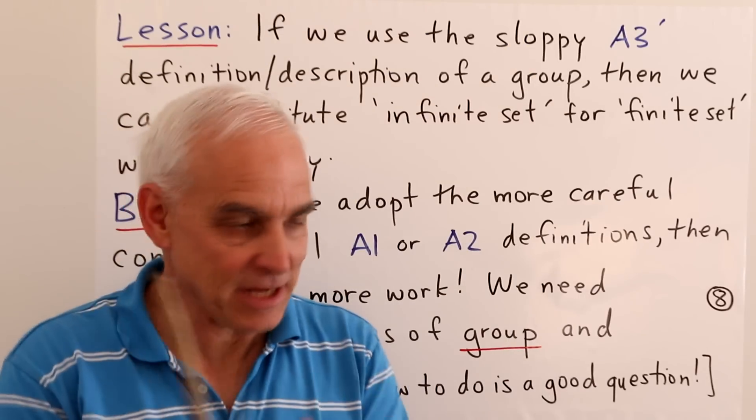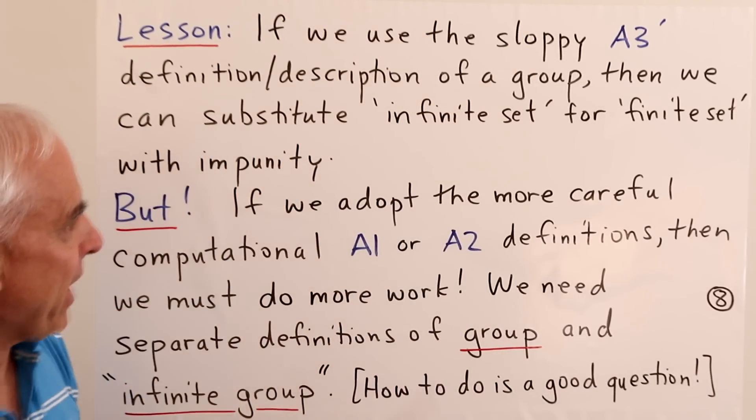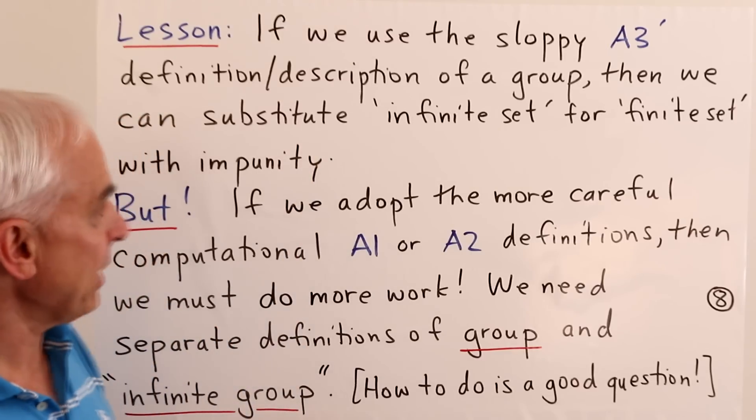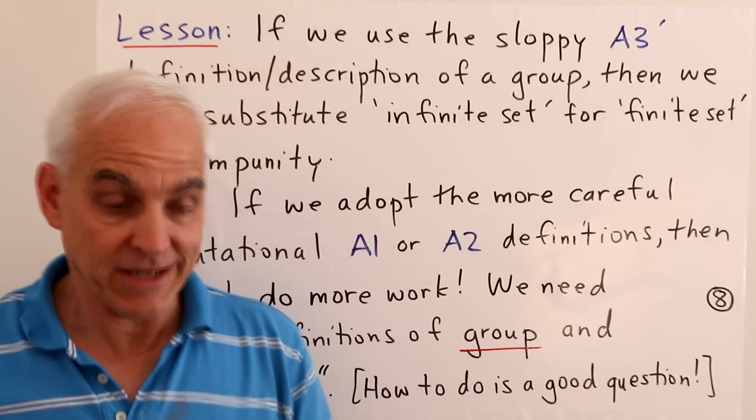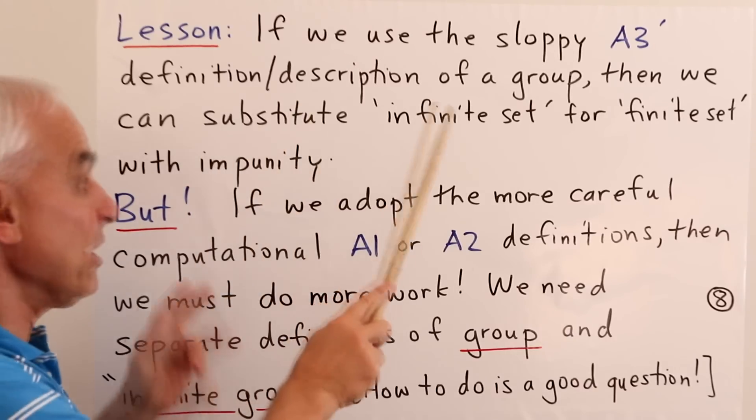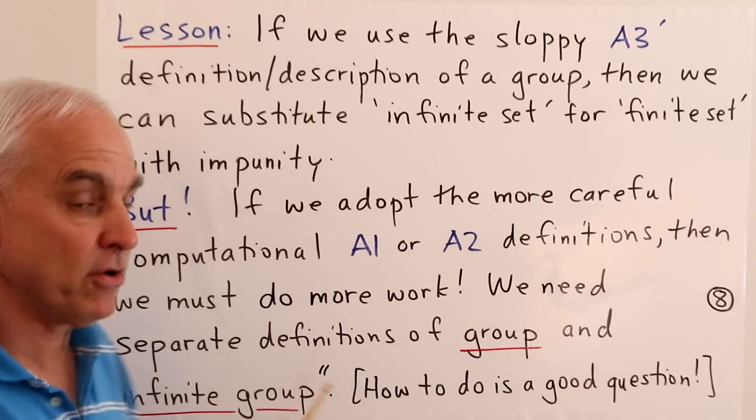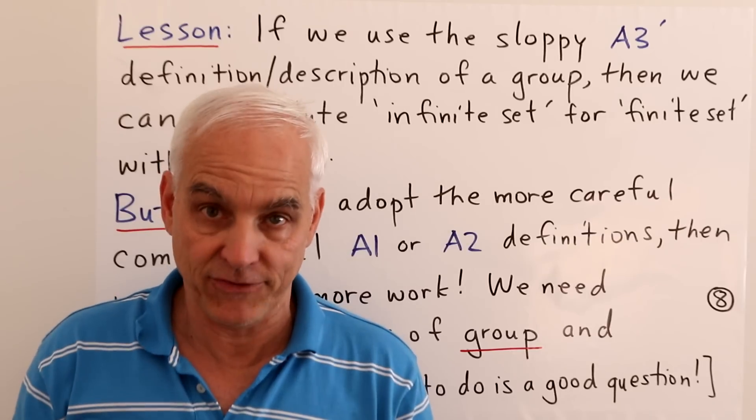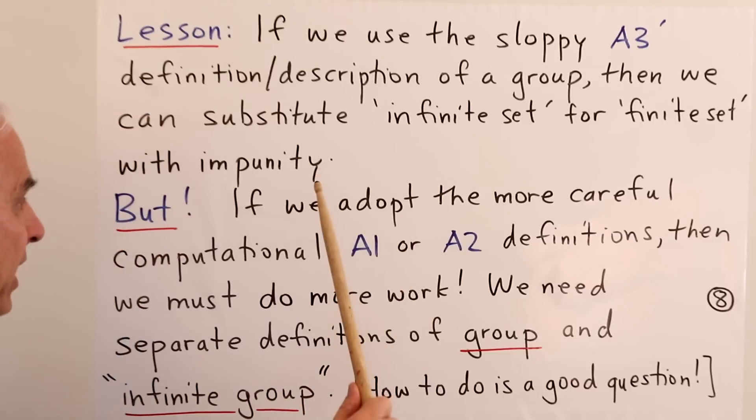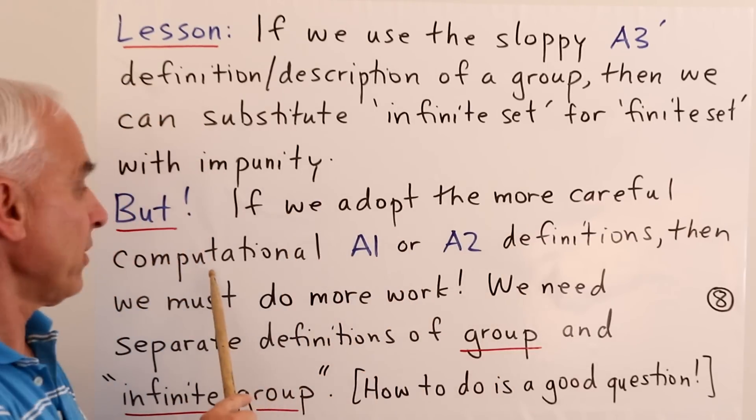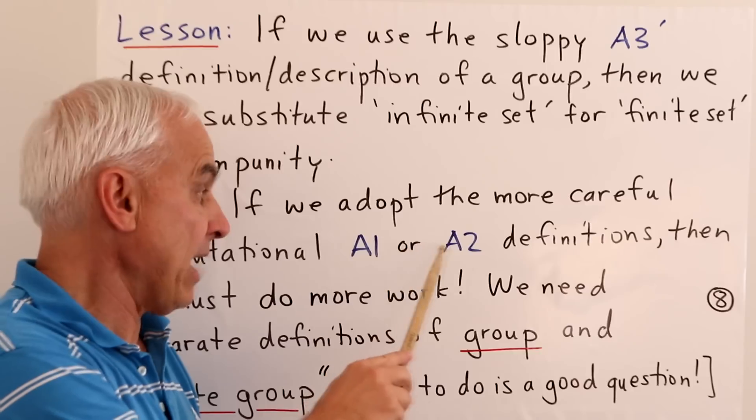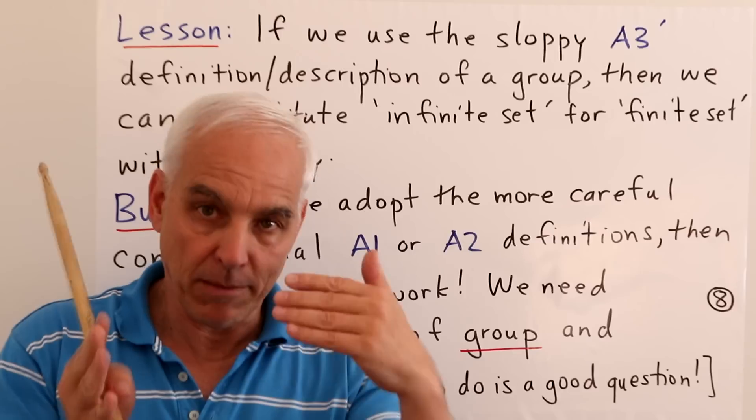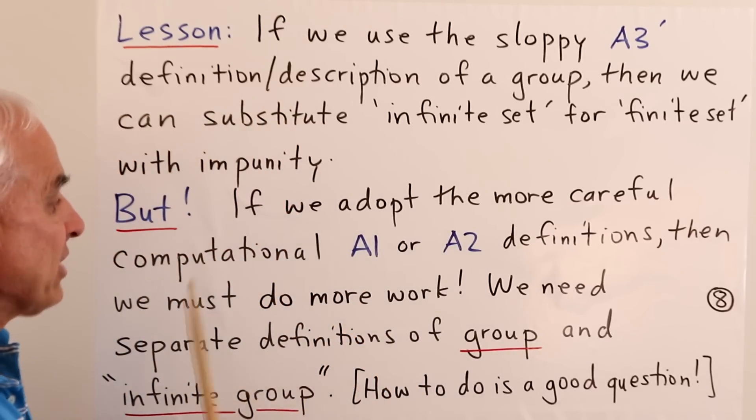So let me phrase what we've been discussing in the following lesson. That if we use the sloppy A3 prime definition or description of a group, and I'm inclined to think of it more as a description rather than a definition, then we can substitute infinite set for finite set with impunity. Because part of the whole story is that we are not being careful about what the word set means in the first place. But on the other hand, if we adopt a more careful computational approach along the lines of the A1 or A2 definitions, which are geared more towards what a computer can understand, then we must do more work.